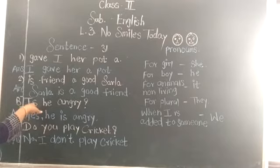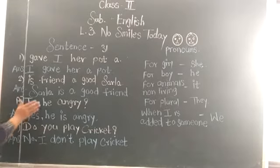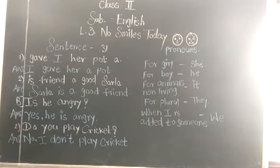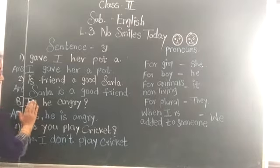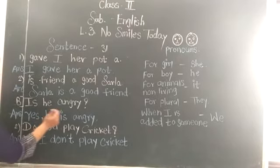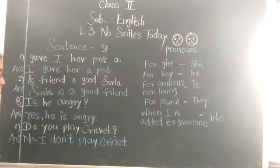We have seen that if a question begins with do, does, is, or are, the answer is simply yes or no. Here the answer is given to you and you have to form the question. The answer is: yes, he is angry. So remove the answer 'yes'. Now 'he is angry' is a statement. To make it a question, take the verb 'is' to the front: 'Is he angry?' And at the end of the sentence put a question mark. Then it becomes a correct question.